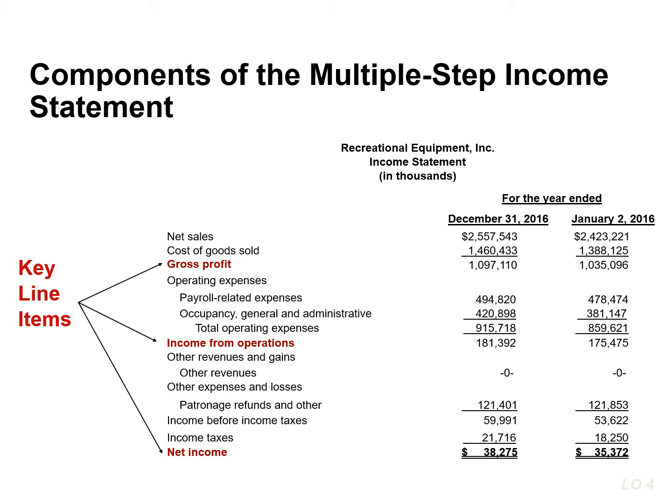You subtract cost of goods sold from net sales to arrive at gross profit. We then deduct operating expenses from gross profit to determine income from operations. Finally, we add or subtract the results of activities not related to operations and subtract income tax expense from income from operations to determine net income.